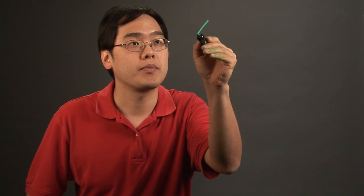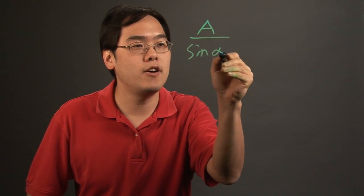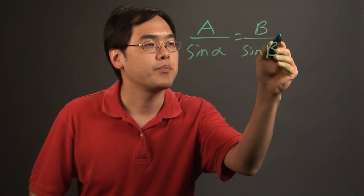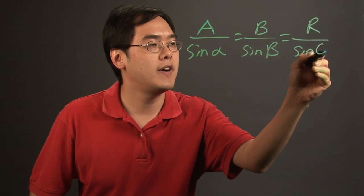So let's talk about how this formula works. You have A over sine of alpha equals B over sine of beta equals R over sine of phi.